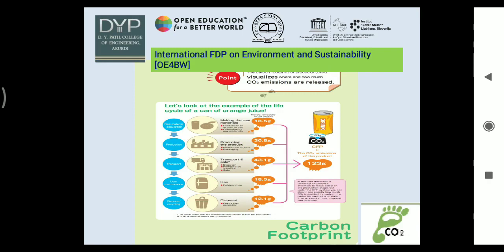How do we calculate CFP, that is carbon footprint? Here is an example using a simple can of orange juice. To calculate the carbon footprint for anything, these steps should be followed: 1. Raw material acquisition — in this example, the raw material is the aluminum can. 2. Production — orange juice and juice packaging. 3. Transport — transportation, dispatch, and selling. 4. Use and maintenance — refrigeration for orange juice is a must. 5. Disposal or recycling — in many cases recycling isn't possible, so how to dispose of the empty can is a big issue.